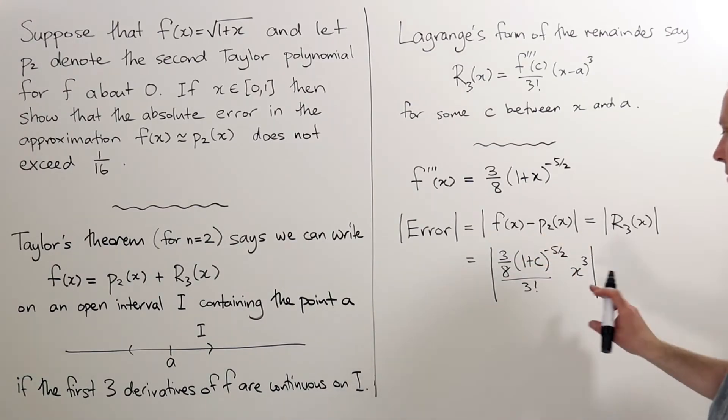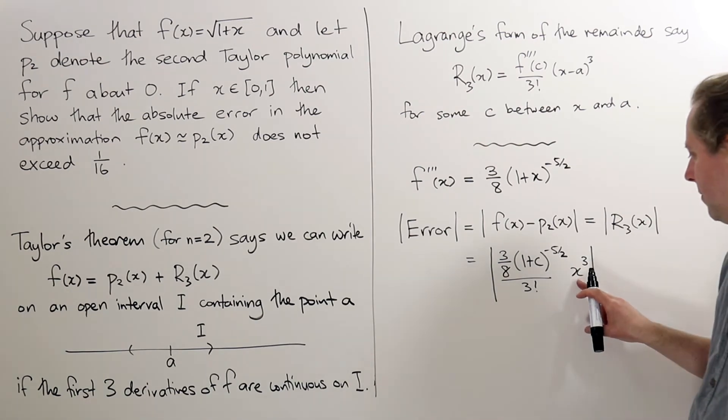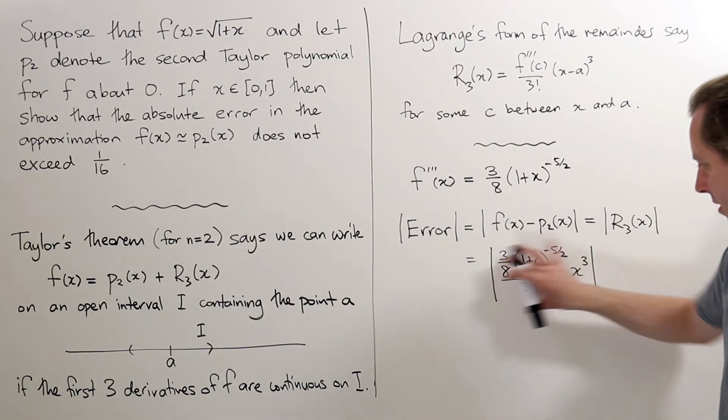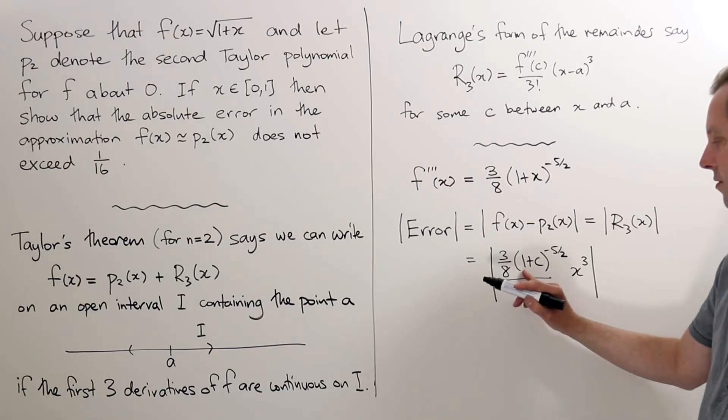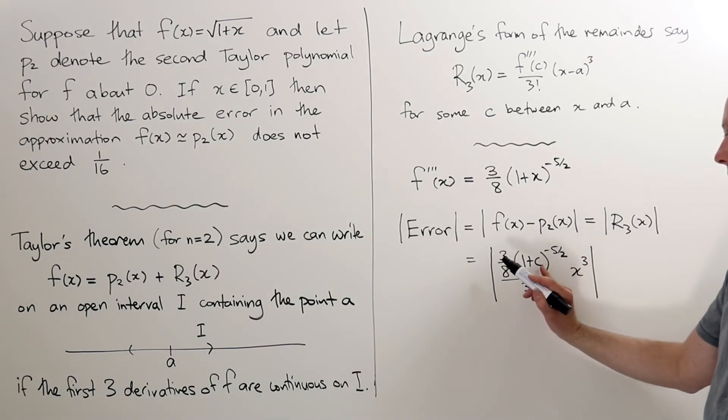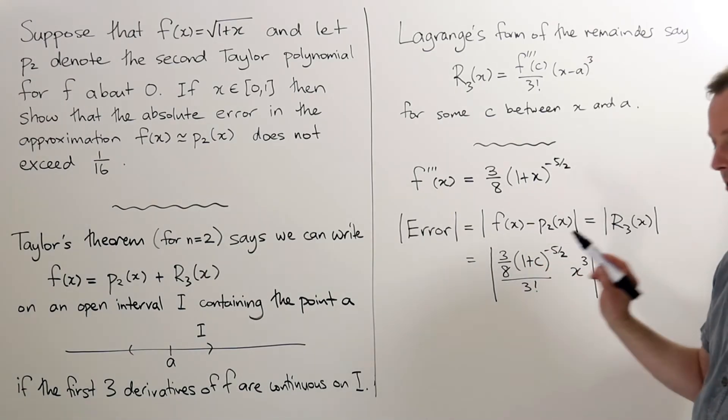If x is smaller then this whole thing would be smaller. So the biggest answer we can get here will be when x equals 1. And this here, this is a negative power, this is minus 5/2, so this will give its largest contribution when the number in here is smallest.